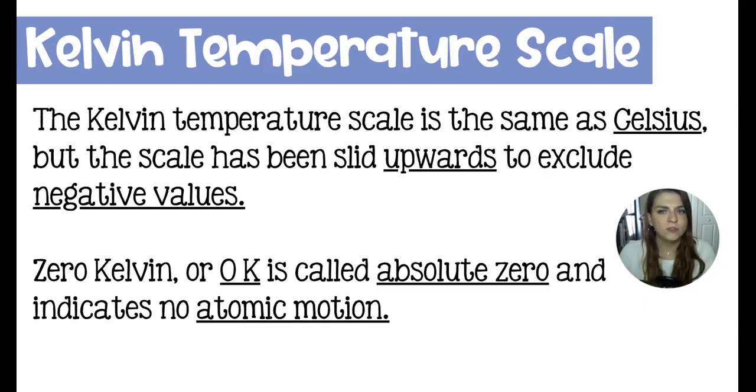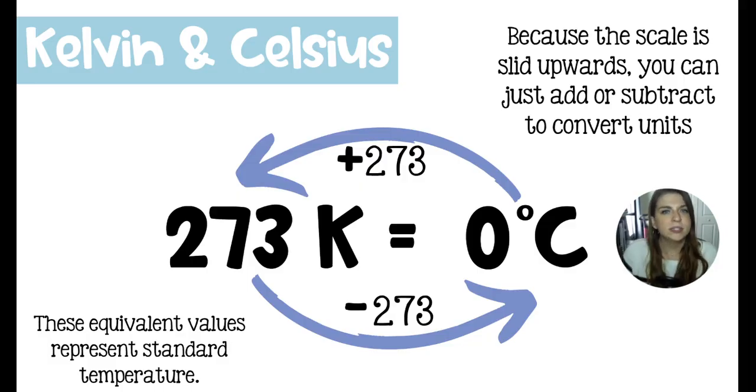So that's why the conversion between these is not all that difficult. In order to convert between Kelvin and Celsius, you would either add or subtract 273. And again, this is because they have the exact same size. So it's like a Fahrenheit is smaller than a Celsius. So you have to do some dividing and multiplying, and it's a little crazy. Because these two are the same size, just slid, you can just add or subtract, depending on where you're going.